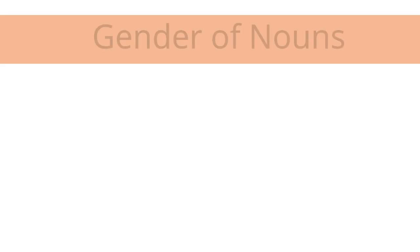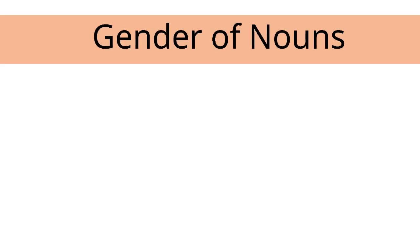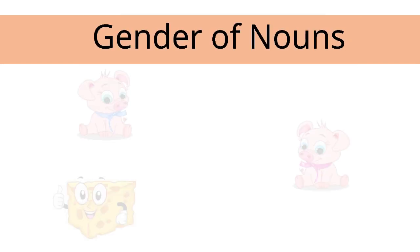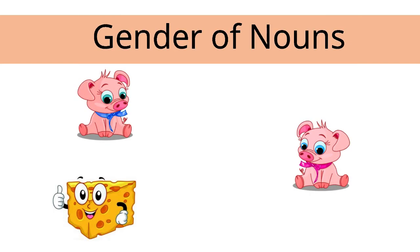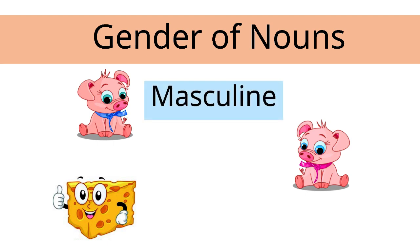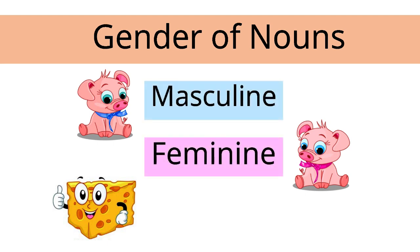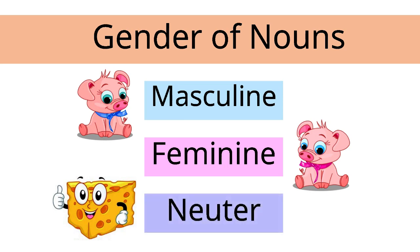The quality of a noun that distinguishes sex is called gender. There are three genders of nouns. They are masculine, feminine, and neuter.